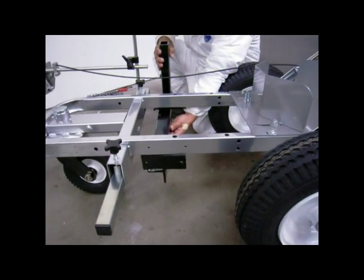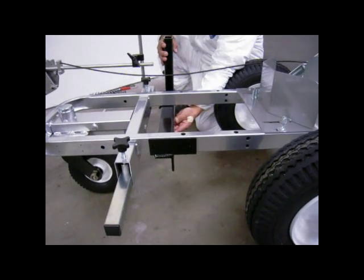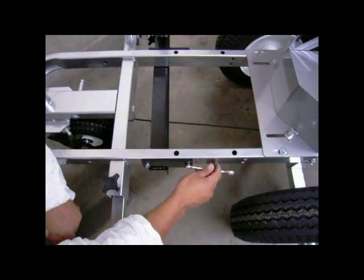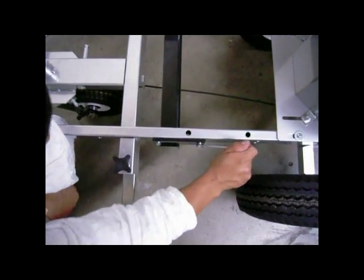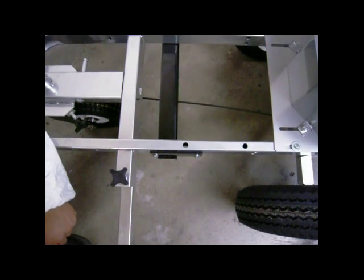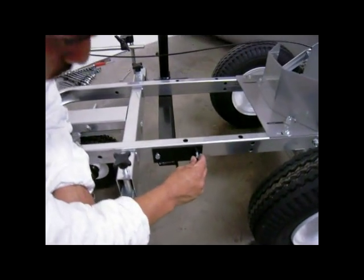Slide the lower mounting bracket under the striper frame but over the top of the caster cable. Position the mounting bracket so that it straddles the outside of the frame of the striper and lines up with the factory installed mounting holes on each side of the frame.